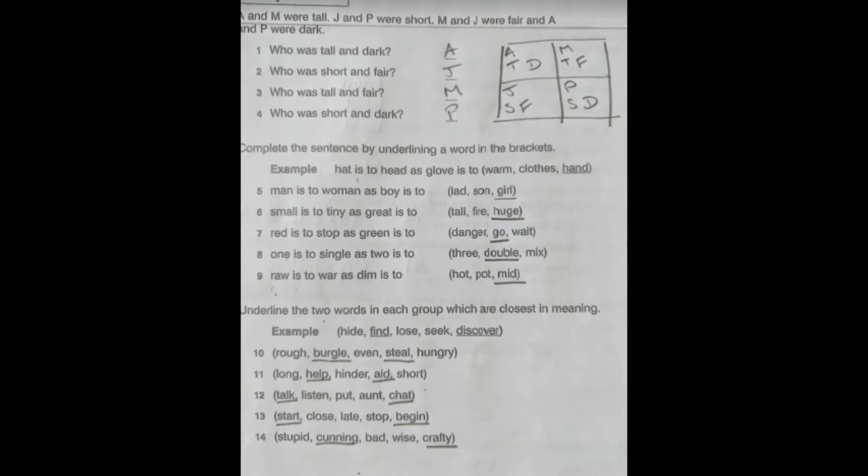Number 3, who was tall and fair? M was tall and fair. And finally, who was short and dark? P was short and dark.